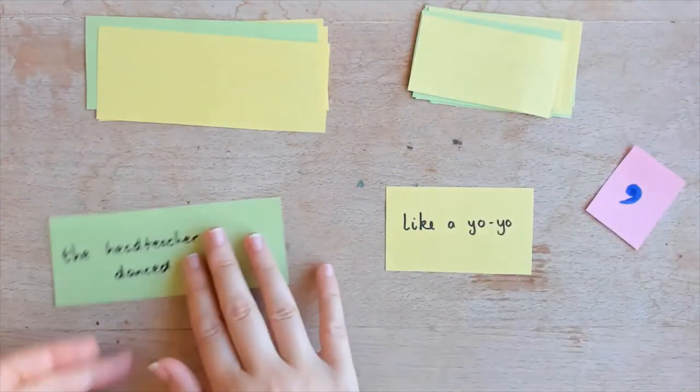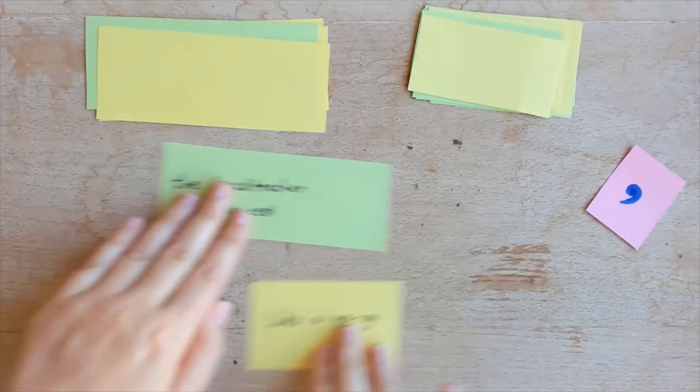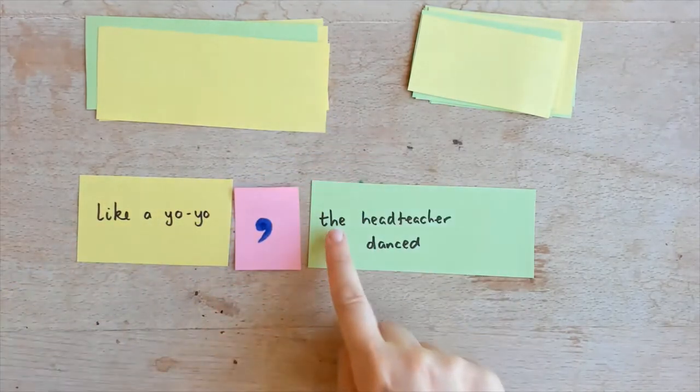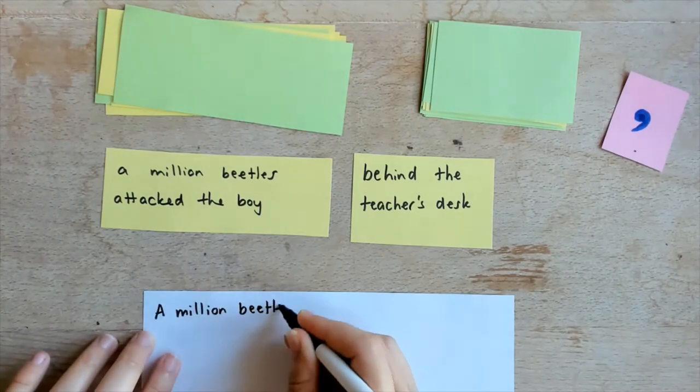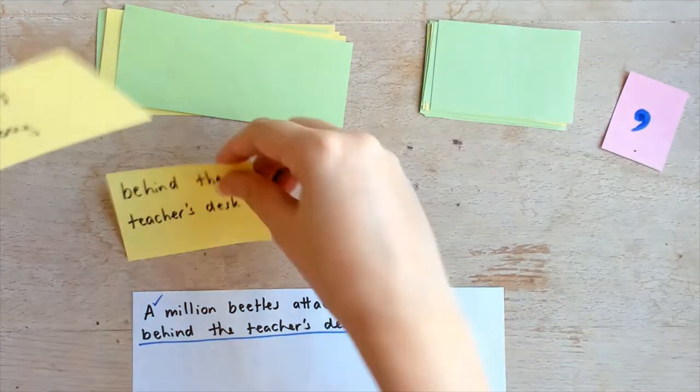Create a comma card and remind children that we place the comma in between the adverbial phrase and the main clause, but only for fronted adverbial phrases which were at the start of the sentence. You could then challenge learners to record their sentences accurately, adding full stops and capital letters where they are needed.